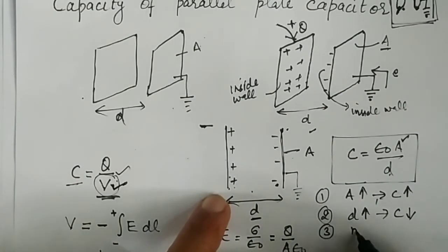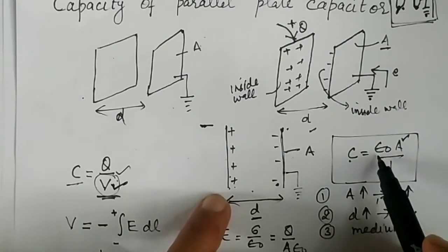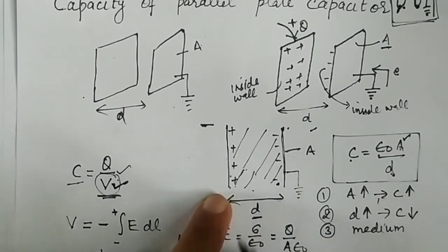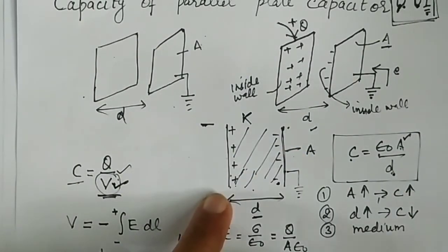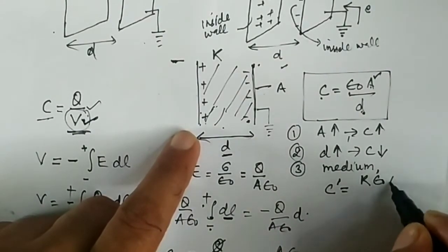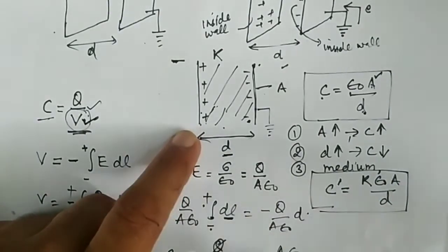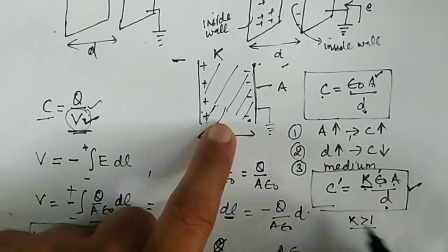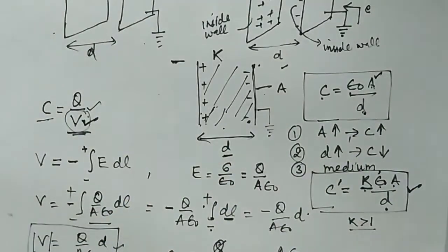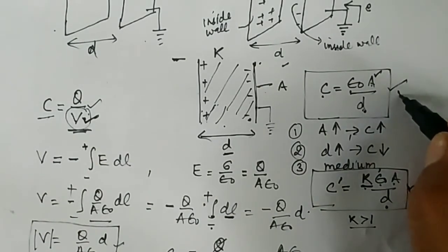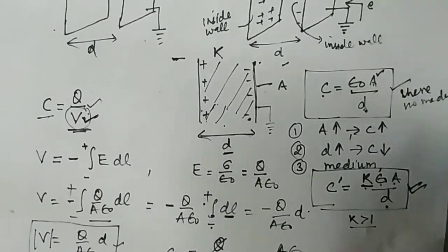The third factor is the medium between the plates. In vacuum, the capacitance is simply epsilon naught A divided by D. But if we fill the capacitor with a dielectric medium having dielectric constant K, the capacitance is modified to C equals K times epsilon naught A divided by D. Since K is greater than one for any dielectric, inserting a dielectric enhances the capacitance. Remember both formulas — one for vacuum and one for a dielectric medium.